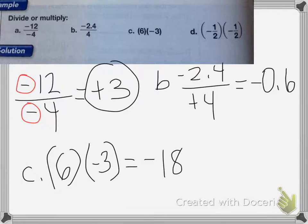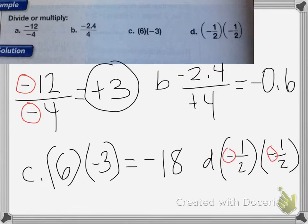For D, I have negative 1 half times negative 1 half. Since both symbols are the same, my answer will be positive. So it equals positive 1 fourth.